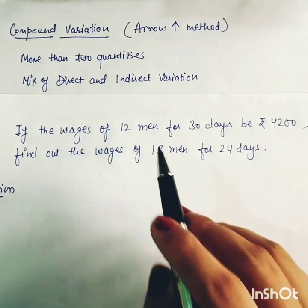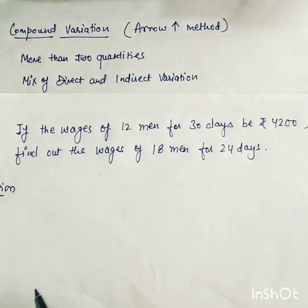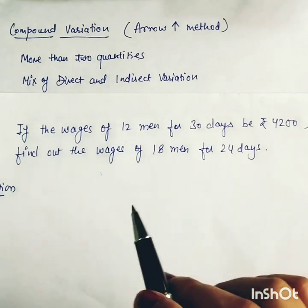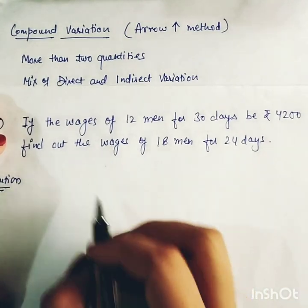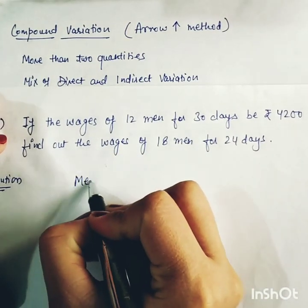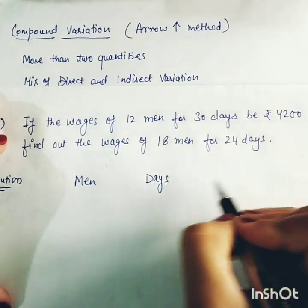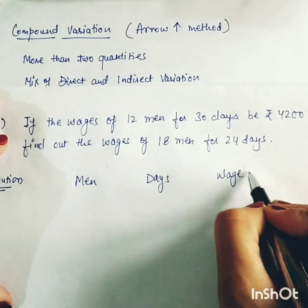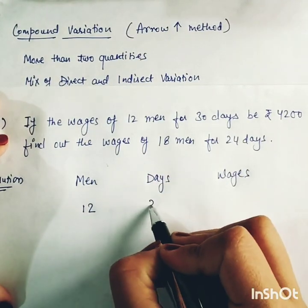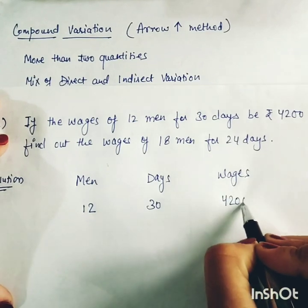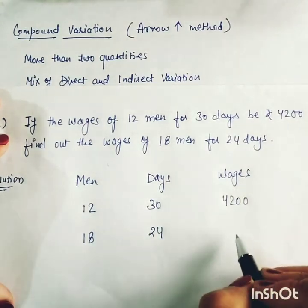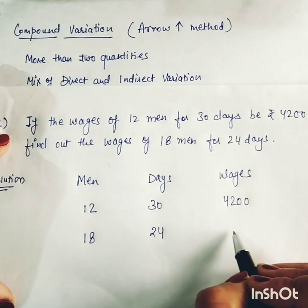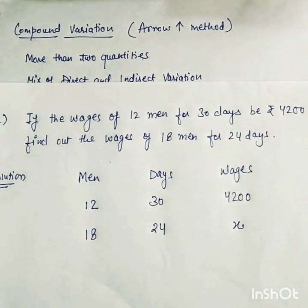We note down all the quantities. 12 men working for 30 days get Rs. 4200. We have to find out for 18 men working 24 days, how many wages will they get — we will consider that unknown value as x. So the first step is to note down all the quantities.